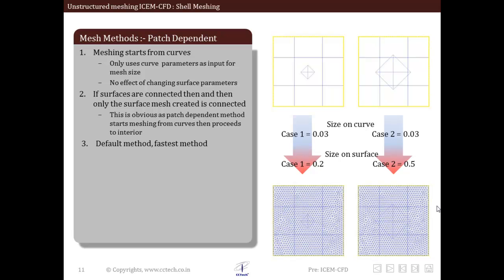Difference in surface mesh size is evident by observing the tetra at the center of each surface which represents the surface mesh size. But as we can see, the mesh created is same, thus surface mesh size has no effect on the mesh created.